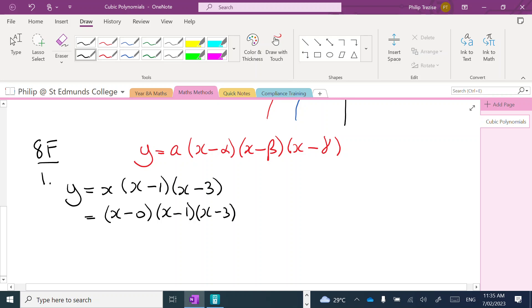That gives me, well, the vertical dilation factor is 1. It's as if there's a 1 there. Our first root of the equation is 0.